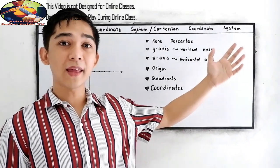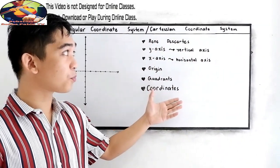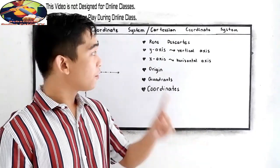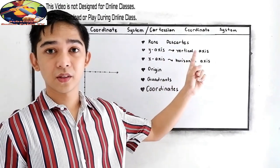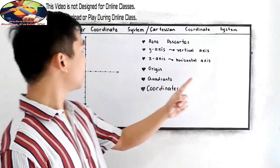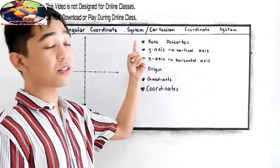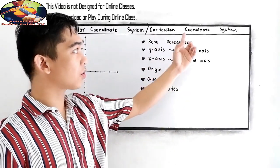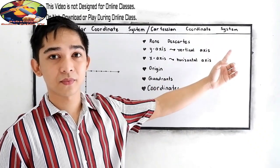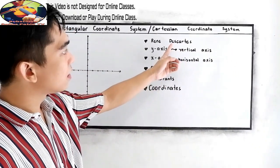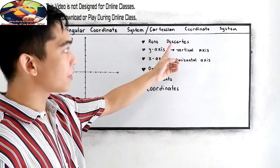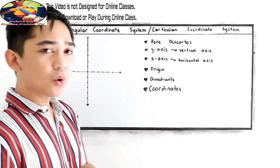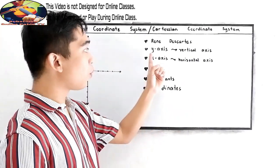You will encounter the different mathematical terms and proponents of the rectangular coordinate system. First, we have Rene Descartes. He is the proponent of the rectangular coordinate system. That's why it's also known as the Cartesian coordinate system — it came from his name, Descartes. You will also encounter the y-axis.